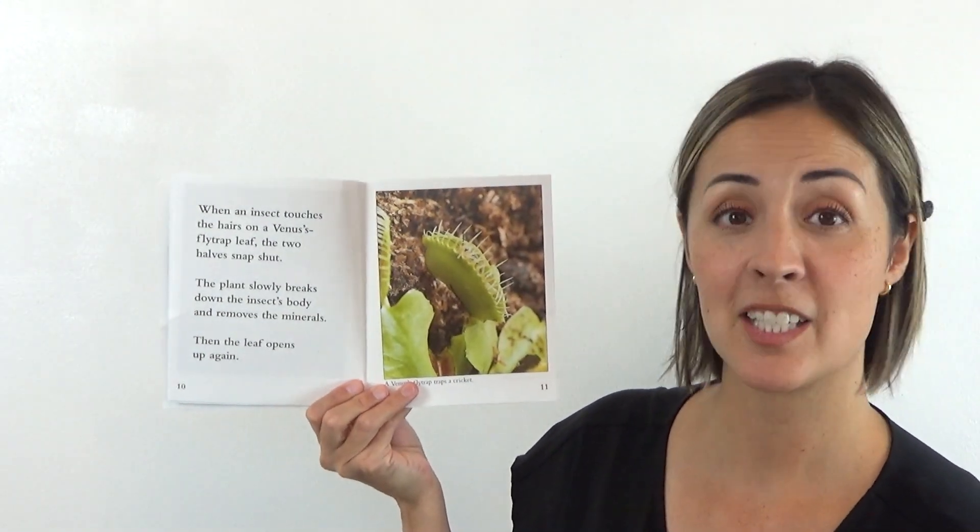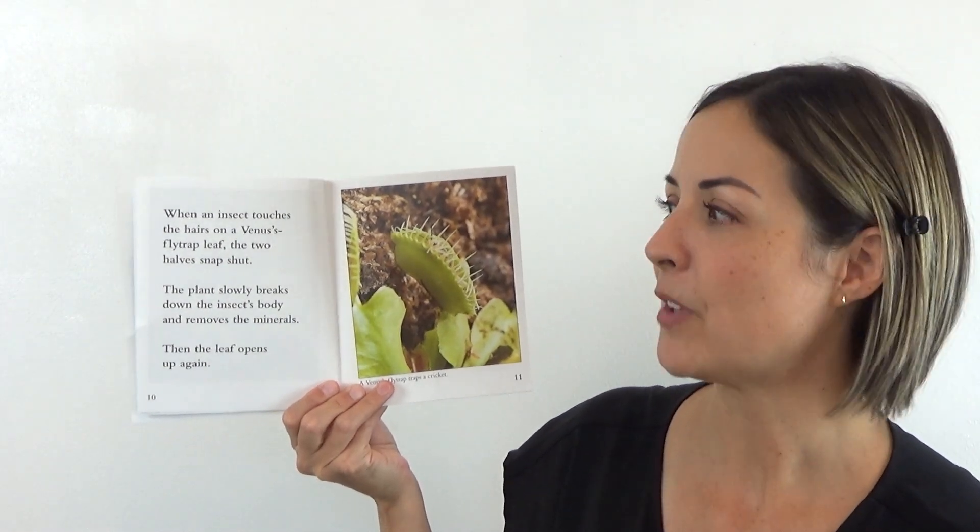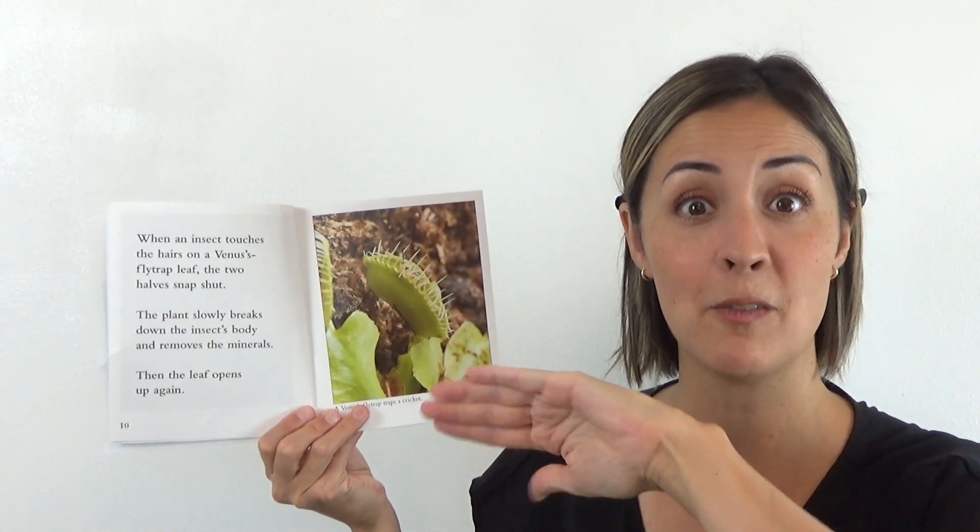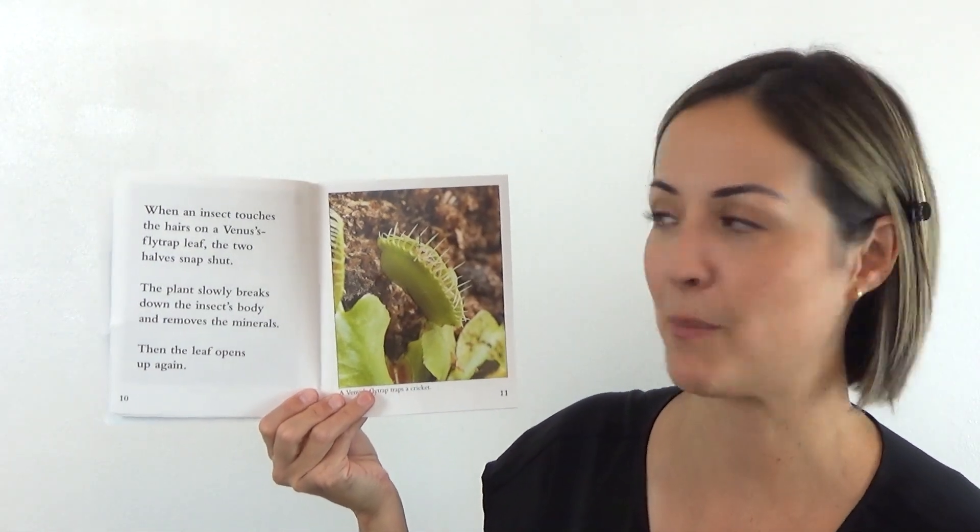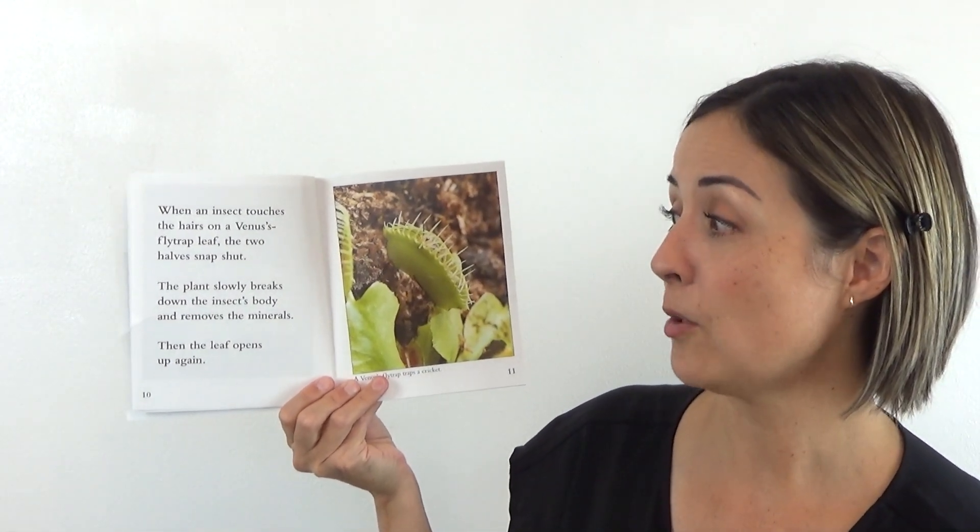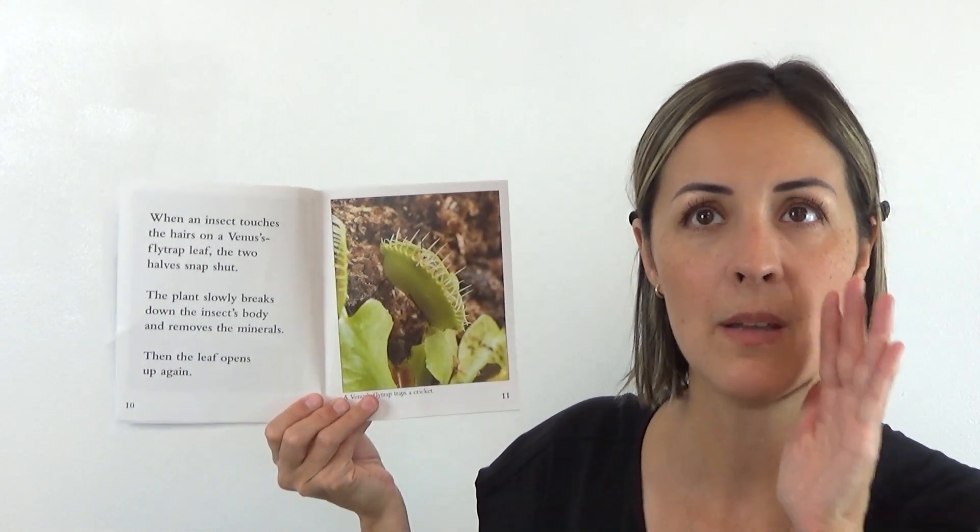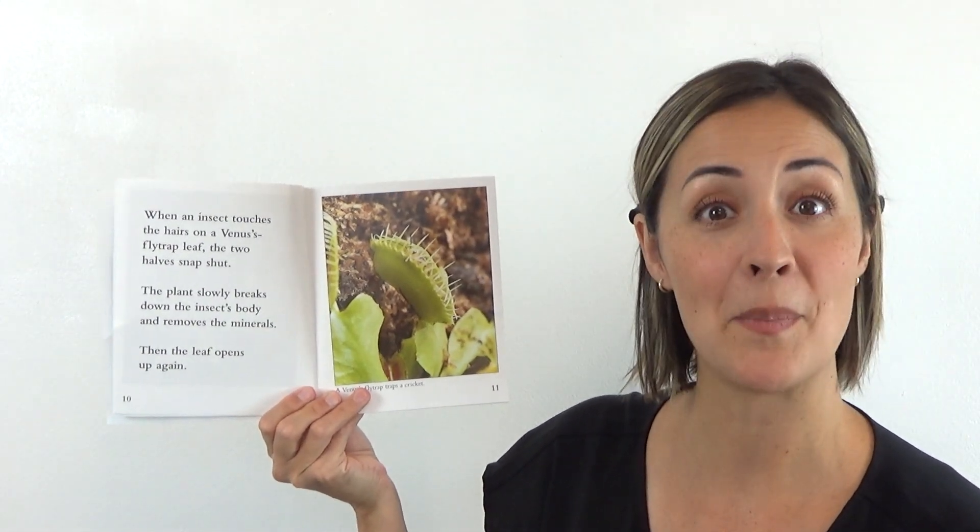When an insect touches the hairs on a Venus flytrap leaf, the two halves snap shut. So remember the soft little hairs inside the leaf? If the insect lands on those, that's when the leaf snaps shut. The plant slowly breaks down the insect's body and removes the minerals. It takes the nutrients away for its food. Then the leaf opens up again.